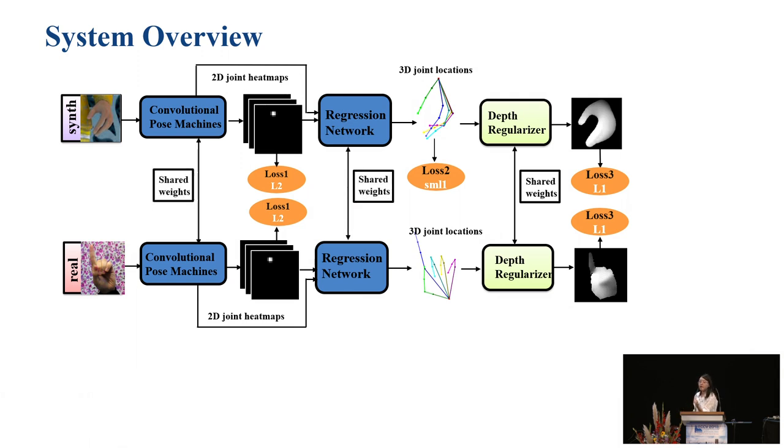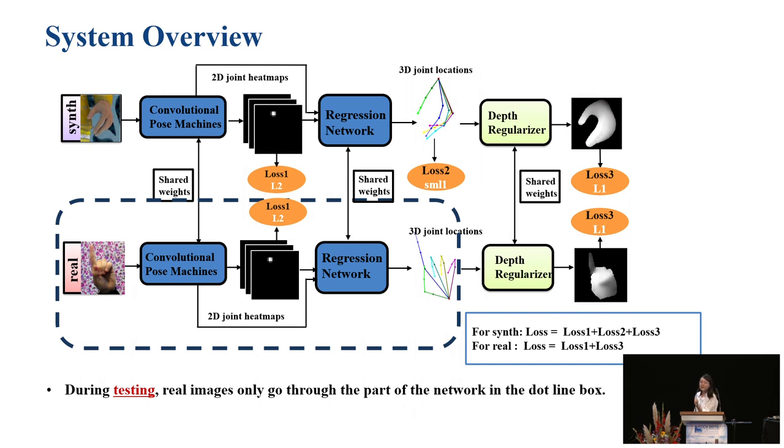The 3D joints and the depth images have many similarities, both in synthetic and real data, so we share weights for the depth-regularizer. All networks share weights. For the loss function, synthetic data has 2D loss, 3D loss, and depth loss. For real images, we do not directly get 3D loss, but we get 2D loss and generated depth loss. During testing, real images only go through part of the network, getting RGB input and 3D output. Both synthetic and real data are utilized during training for fused training.